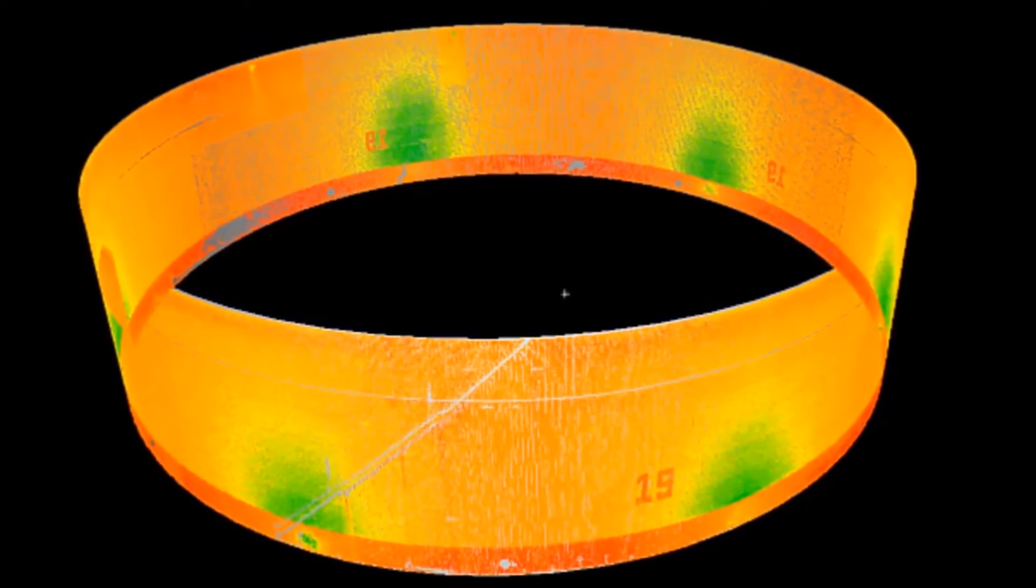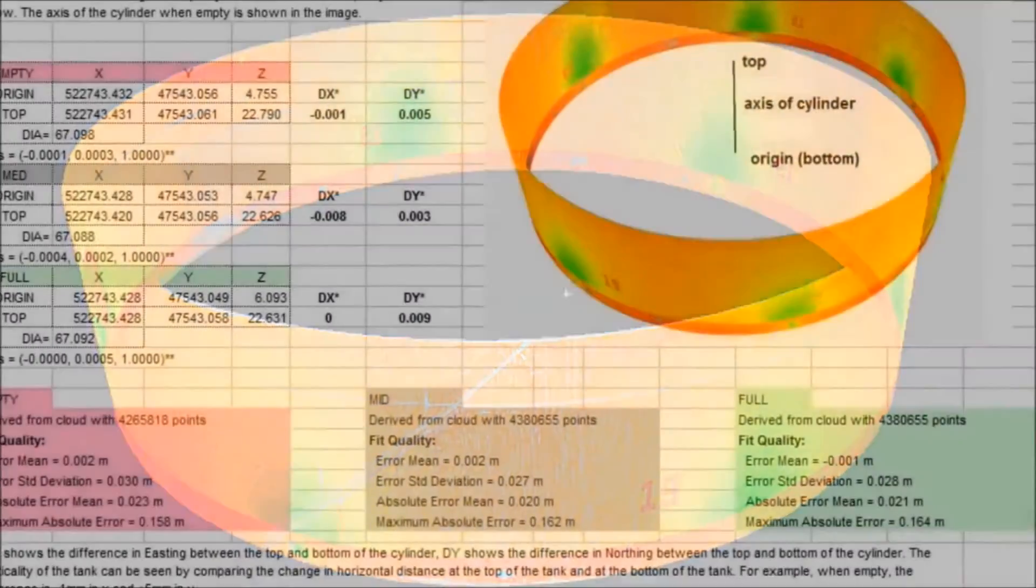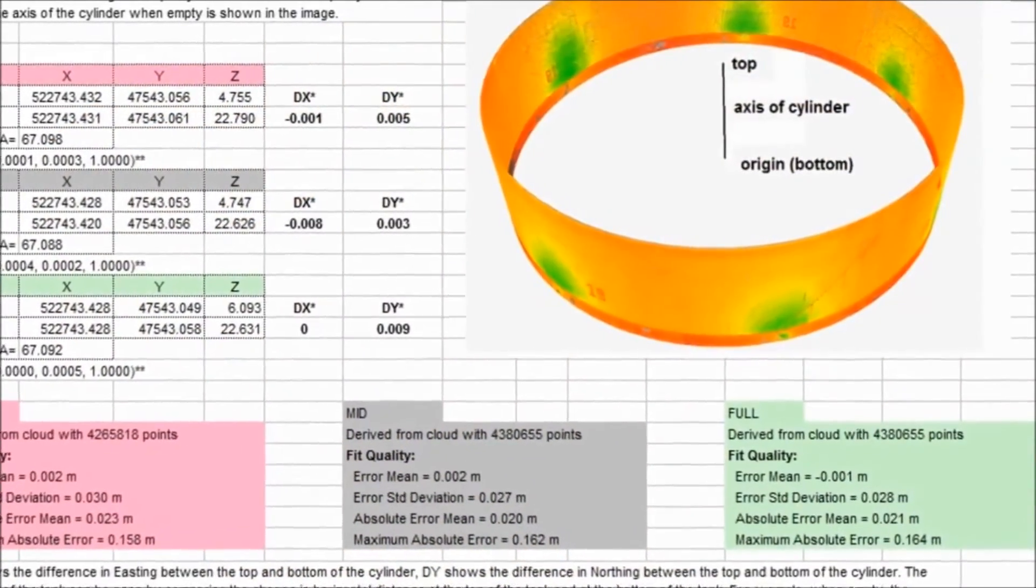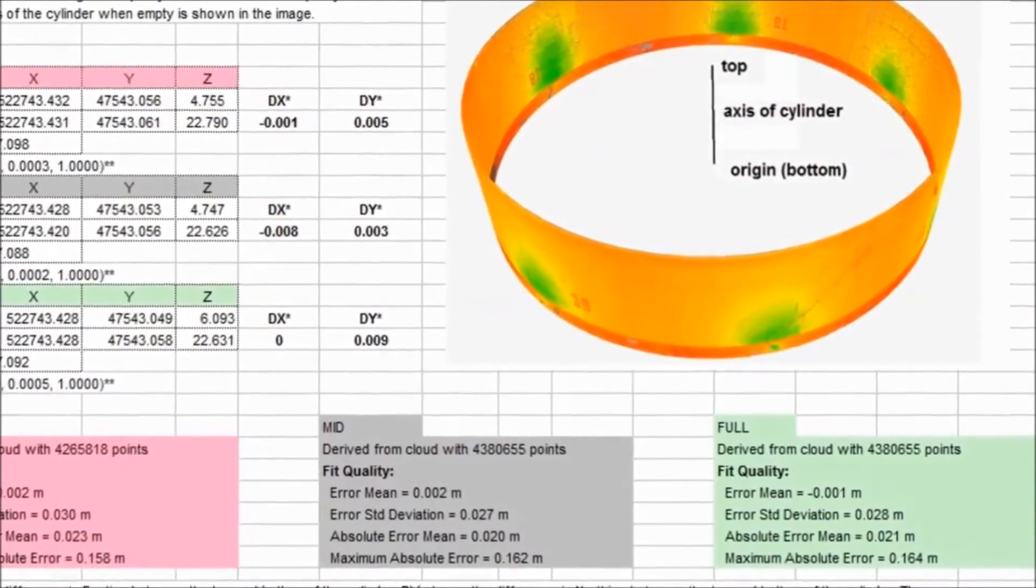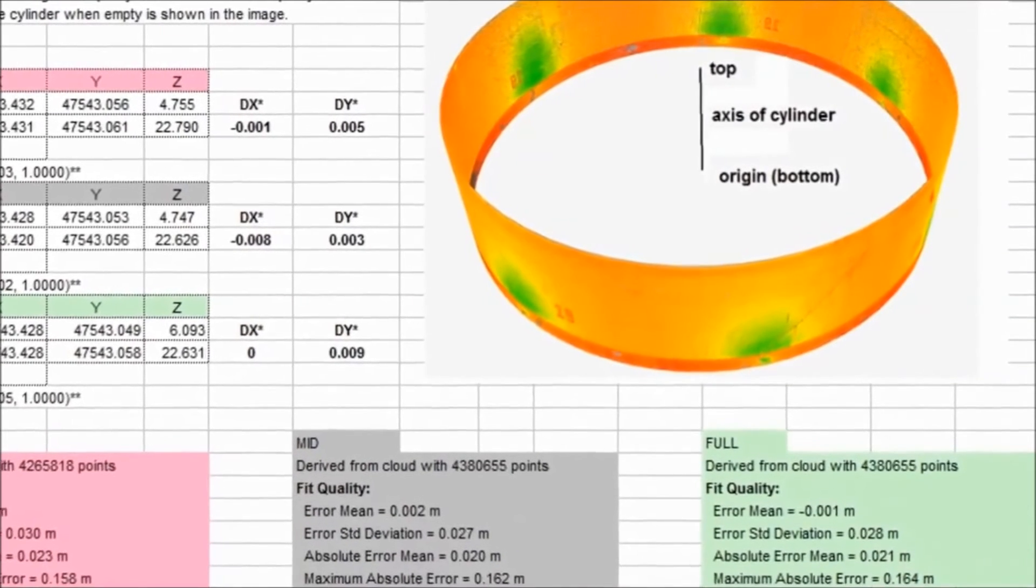Laser scanning allows us to use the millions of points surveyed on the tank wall, which we can best fit a cylinder through. The axis of the cylinder indicates the overall tank verticality.